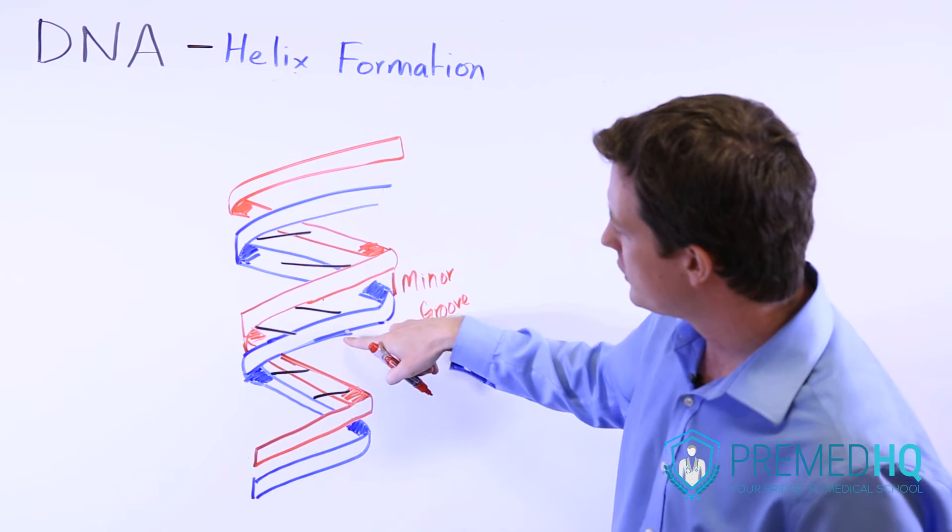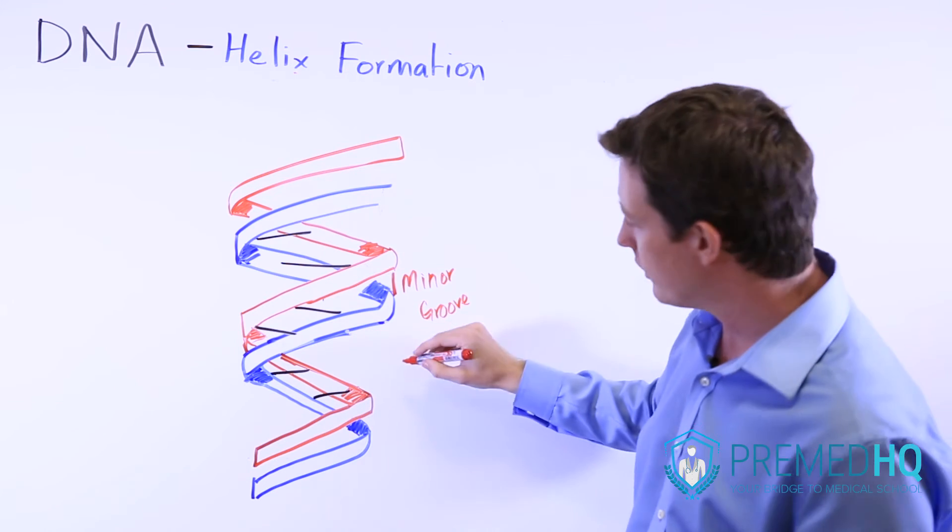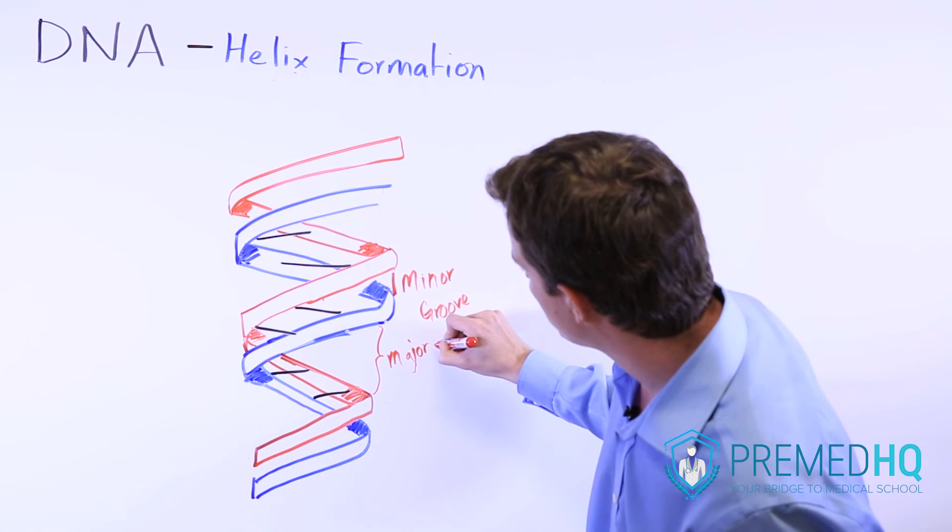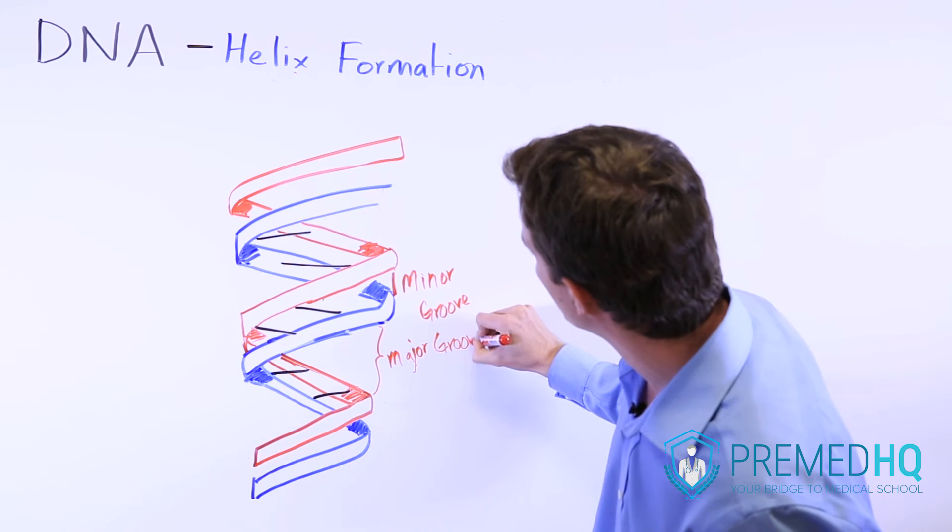And then there's a larger distance between the blue and red here, and this is what's known as the major groove. So it actually assembles into two different grooves.